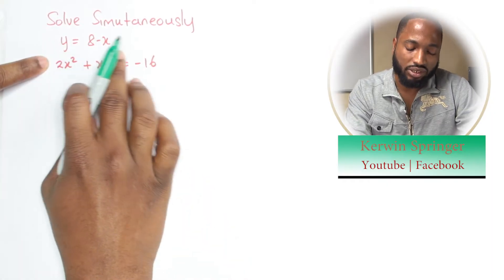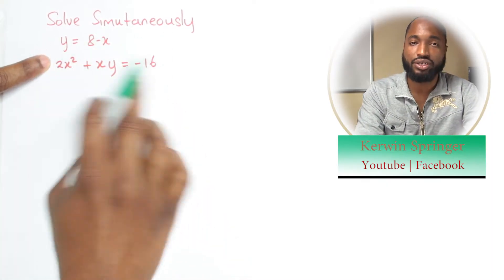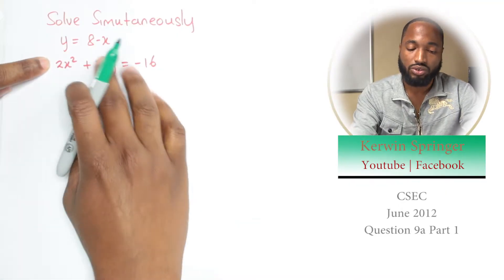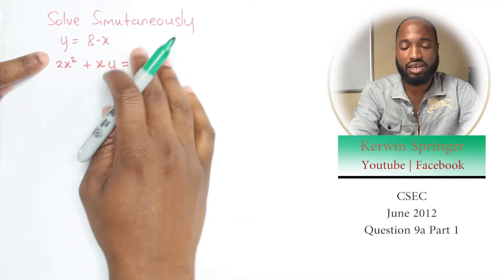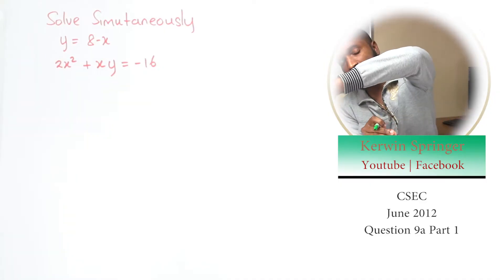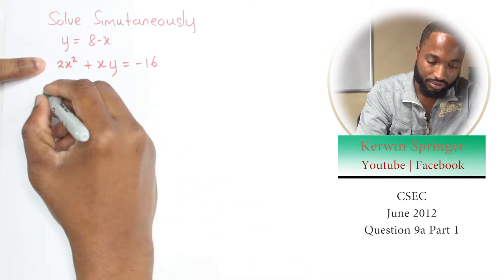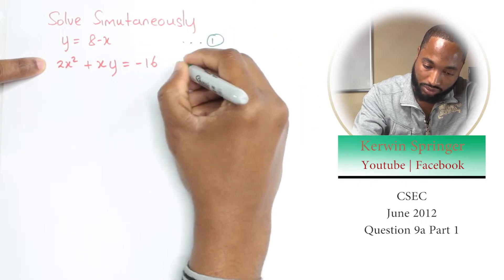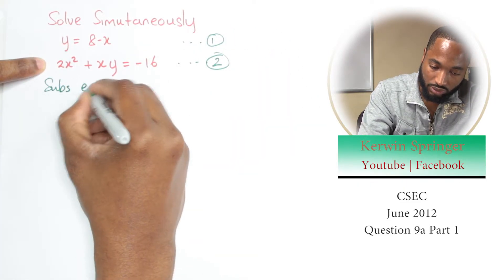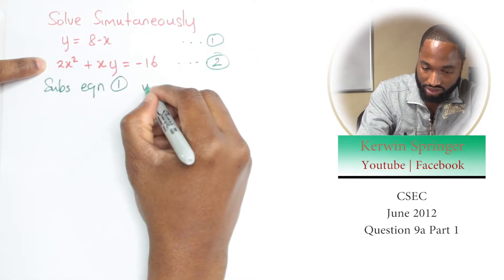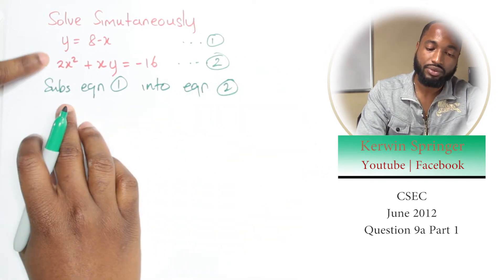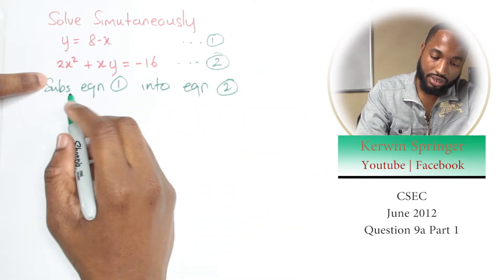Alright, so these simultaneous equations where one is linear, one is nonlinear. When you have this case—linear, nonlinear—always substitute the linear equation into the nonlinear equation. Let's label them 1 and 2. Substitute equation 1, which is linear, into equation 2, which is nonlinear.